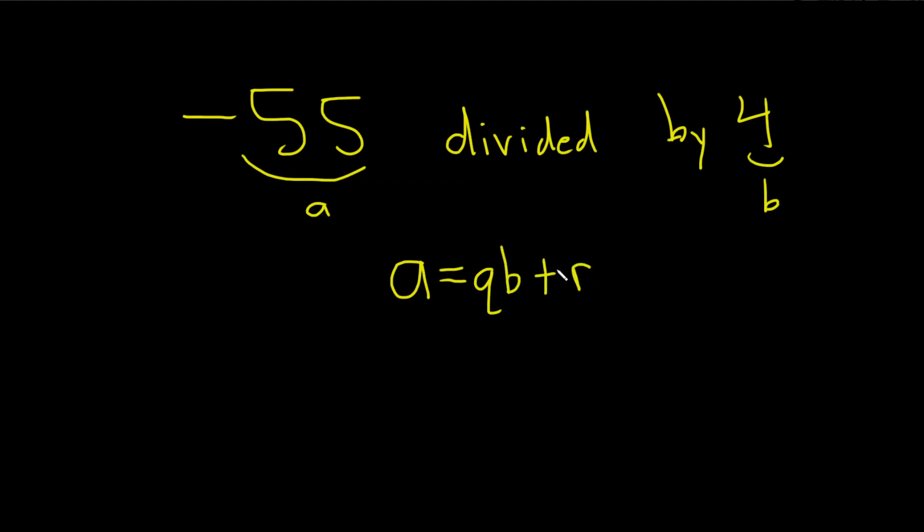Step one in this problem is to take this number and divide it by 4. So you do negative 55 divided by 4. I'm going to put this in my calculator.